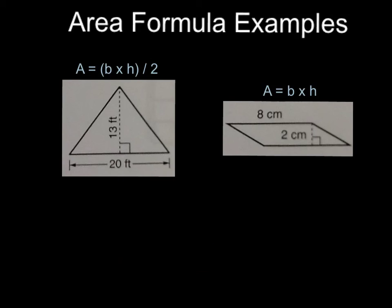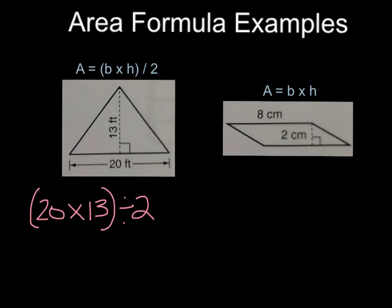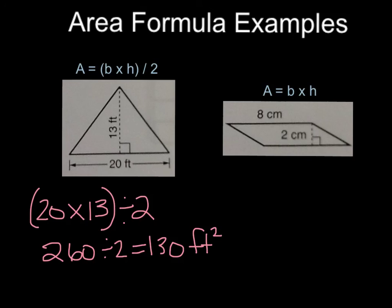Now let's practice one more time finding the area of a triangle. Using the formula A equals B times H divided by 2, we plug in the numbers: the base is 20 feet and the height is 13 feet. We divide that whole product by 2. Twenty times 13 is 260, and 260 divided by 2 is 130. We add our units of feet squared, because we multiplied base times height — two dimensions.